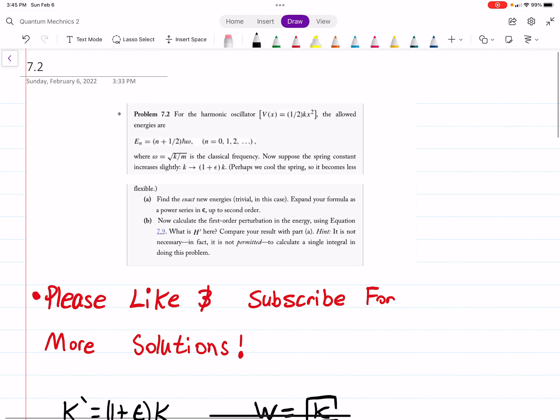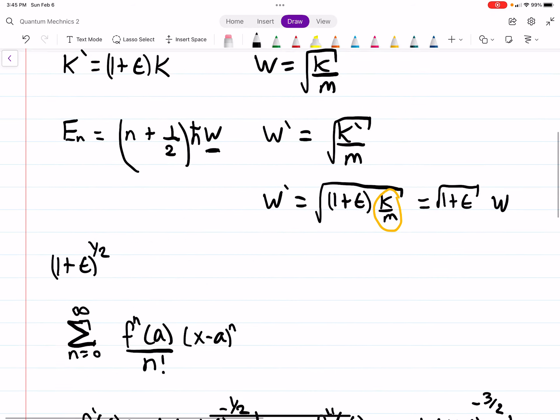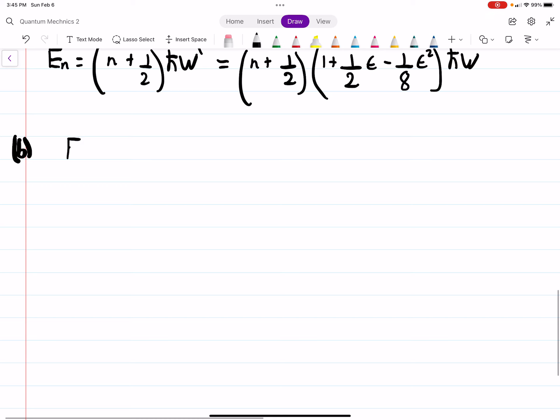Part B says calculate the first order perturbation in the energy using equation 7.9. What is H' here? You're not permitted to calculate a single integral while doing this problem. This equation is the first order correction, and they're asking what H' is. That's kind of a hint.